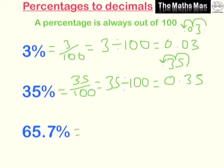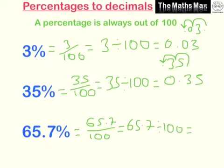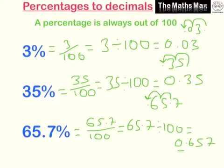For 65.7%, that's 65.7 over 100, the same as 65.7 divided by 100. We write our number 65.7 and move the decimal point once and twice, so the decimal point ends up giving us 0.657. That's how you convert percentages to decimals.